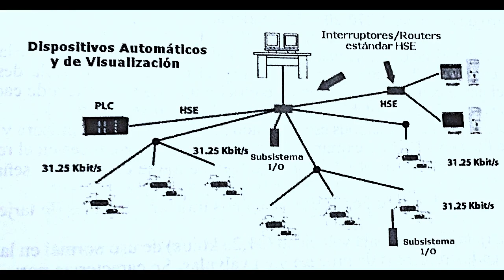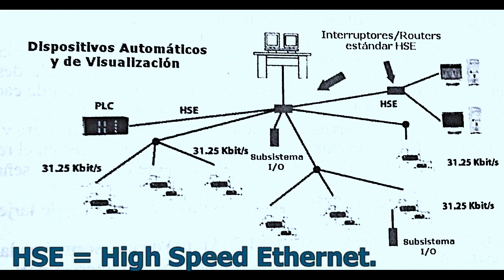A linking device interconnects the 31.25 kbps fieldbus segments and makes them accessible to the 1 Mbps HSE. Since this network uses standard protocols such as TCP/IP, HSE equipment such as switches can create long circuits. The normal supply voltage is 24 volts DC and the resistance of each cable to insulation must be 10 kilo ohms or greater.